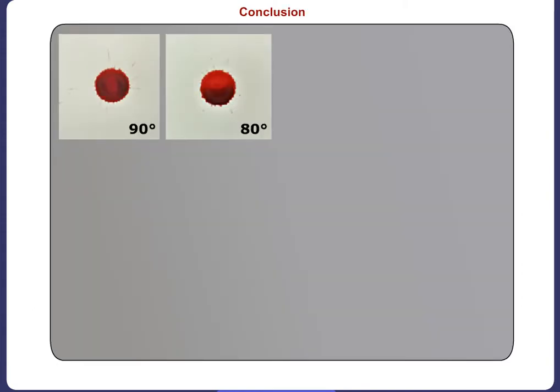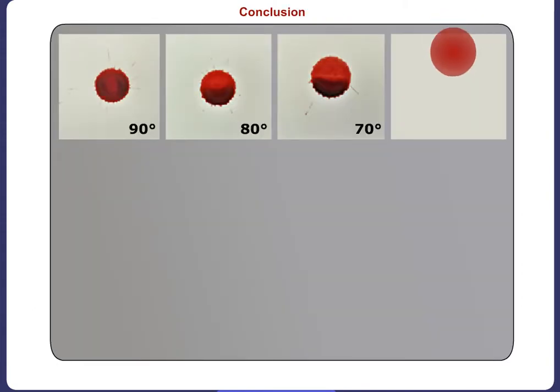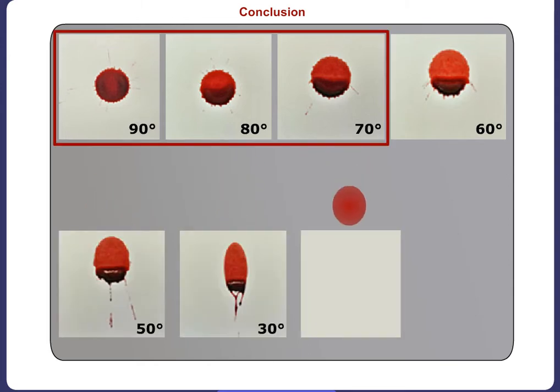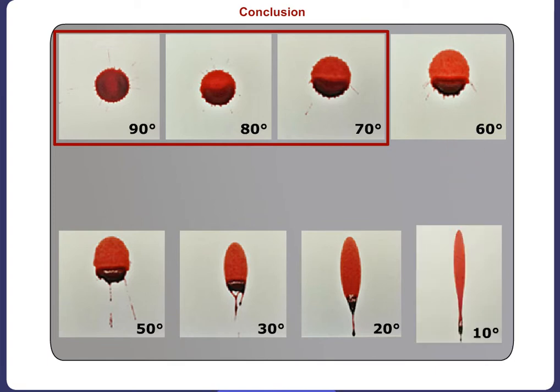Remember, the overall shape of the stain defines the angle of impact. A circular stain indicates an angle that is more perpendicular. When the angle of impact is between 70 and 90 degrees, the stain's spines, scallops and satellites may be evident around the parent stain. Directionality is not clear here and it is important to use caution when trying to determine it.